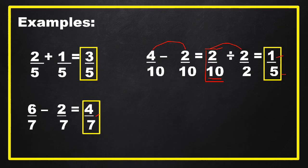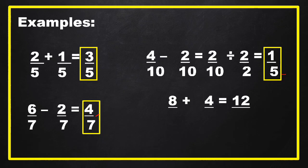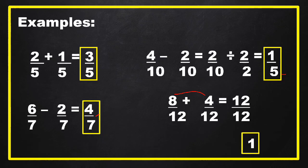Another example: 1 plus 4 over 12. The answer is equal to 12 over 12. 12 divided by 12 equals 1. So the final answer is 1 and 5.